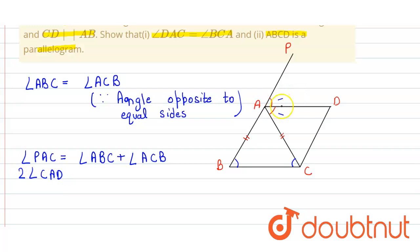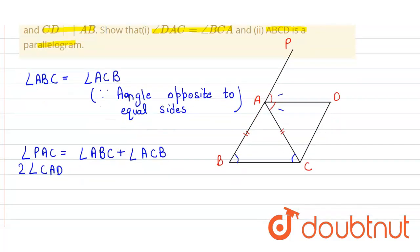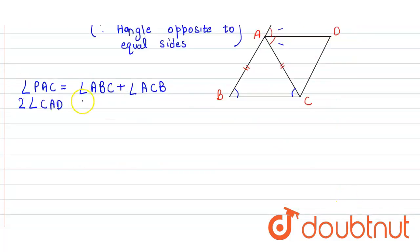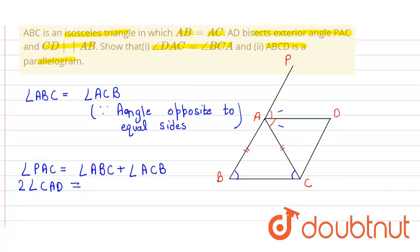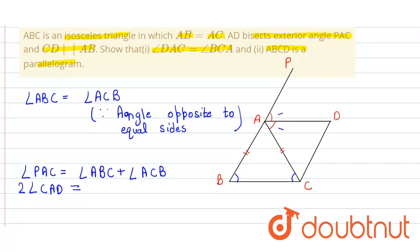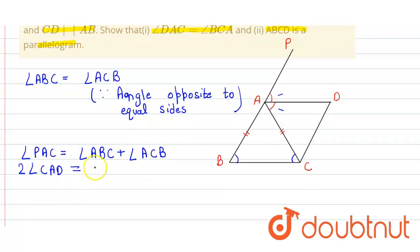It is so because AD is the angle bisector. So here we take two angle CAD is equal to angle ABC plus angle ACB. So we can write it as twice angle ACB.